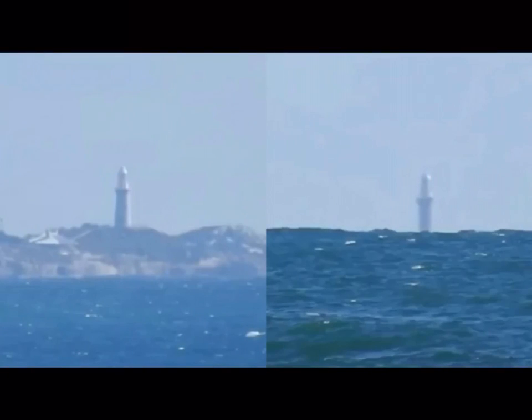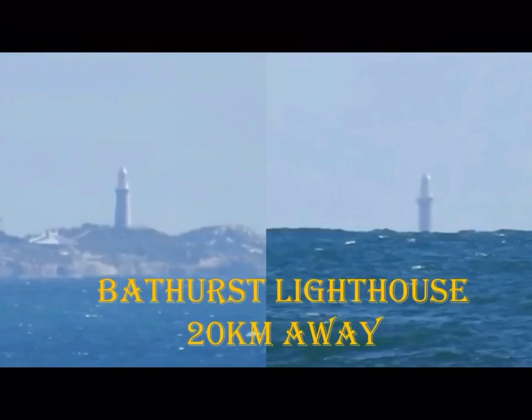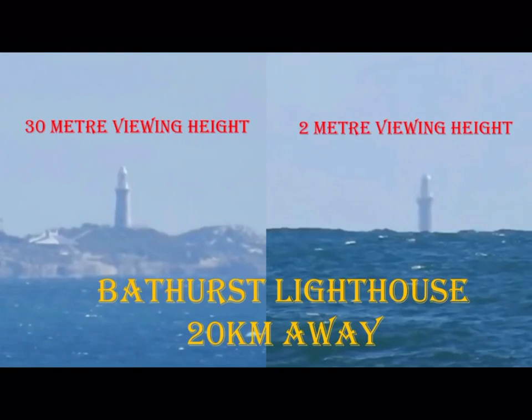Let's add some more distance. This is Bathurst Lighthouse from 20 kilometres away. The left image is from a 30 metre viewing height, and the right image from a 2 metre viewing height. The obstruction in the right image, the globe opponents will assert, is only from earth curvature, and nothing else.